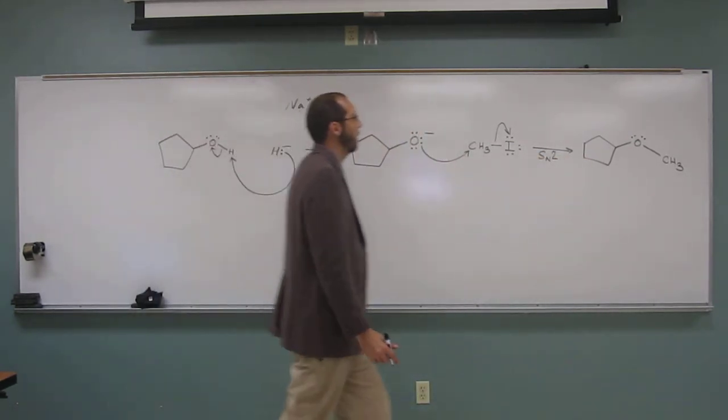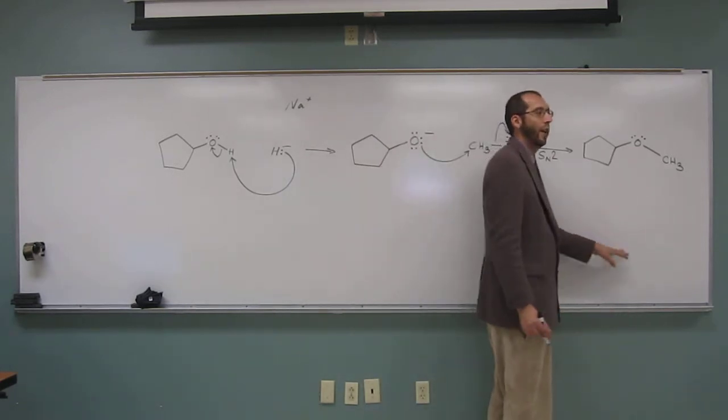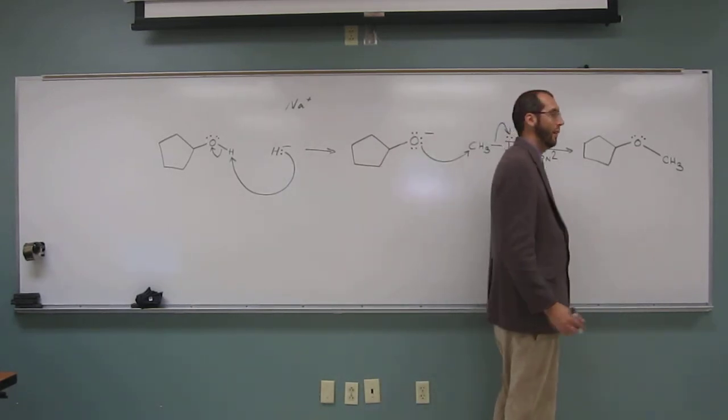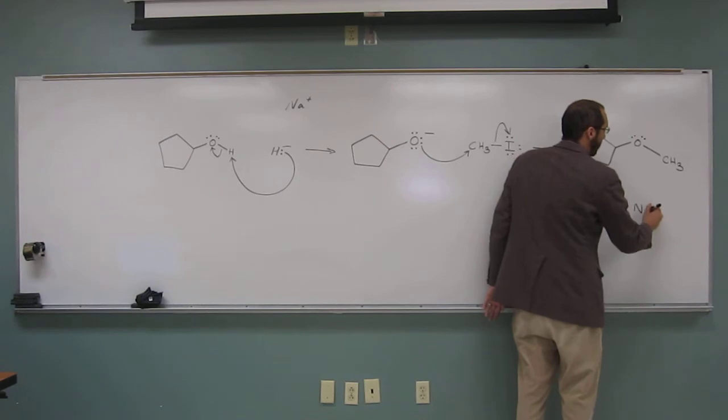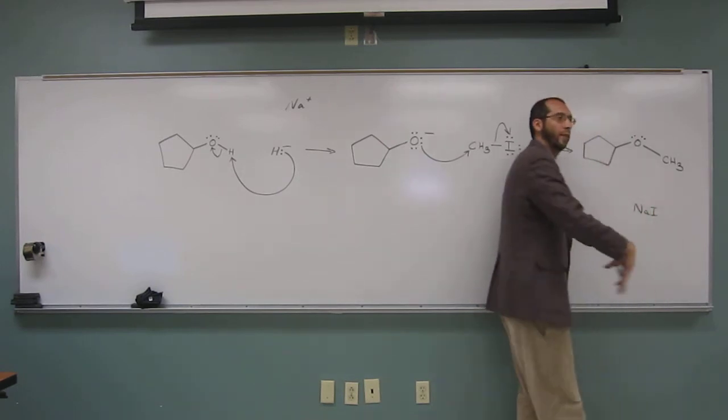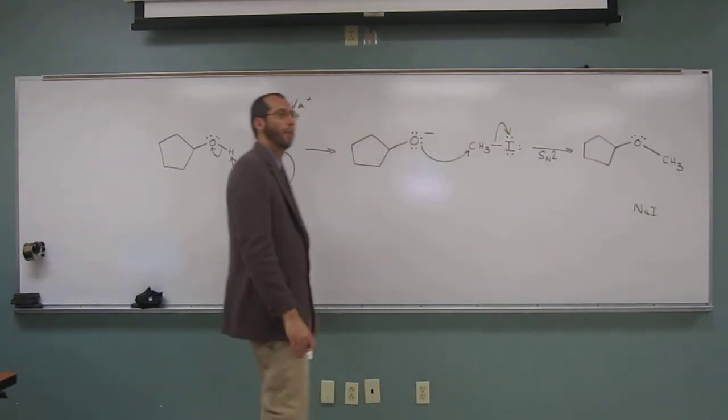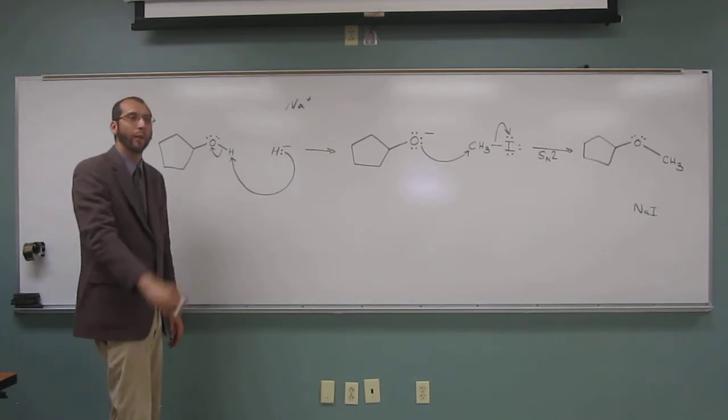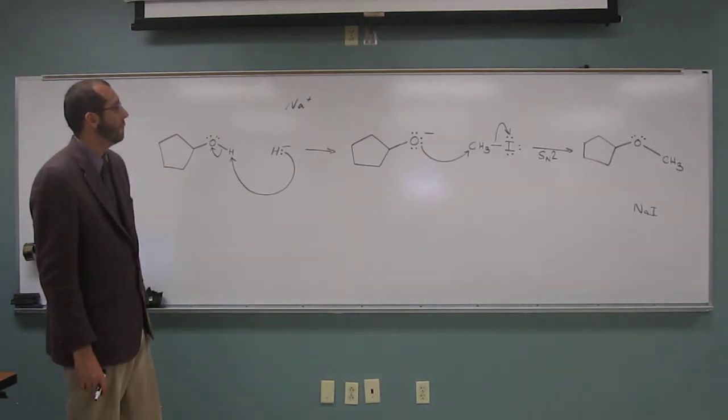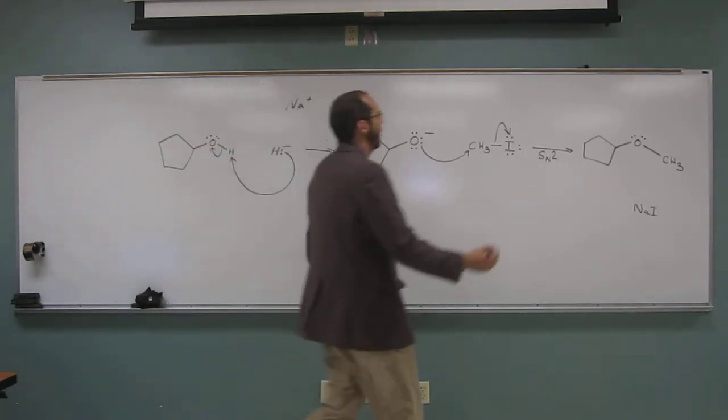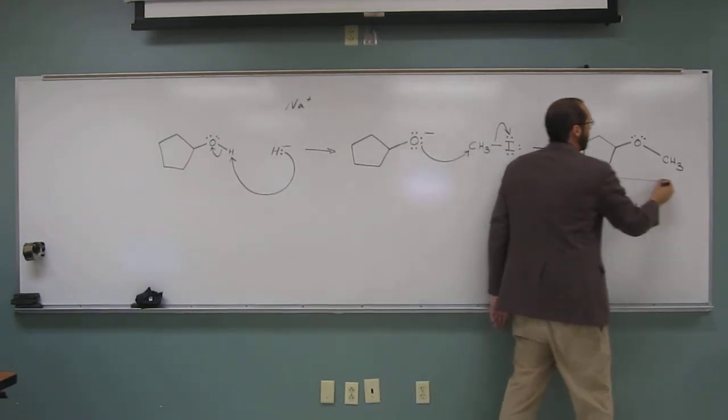And of course, what you'll see in the bottom of your reaction flask is sodium iodide as a salt. So some white in the bottom of your reaction flask. You'll be spinning around those. So that'll be your final product. This is the Williamson ether synthesis.